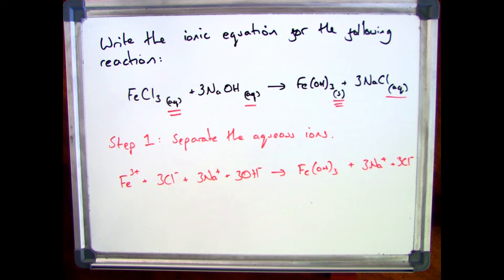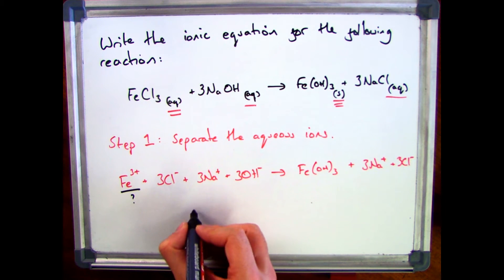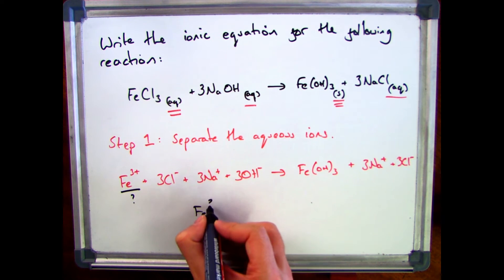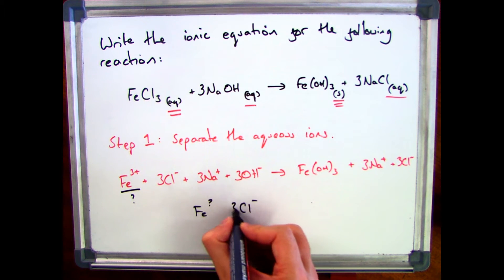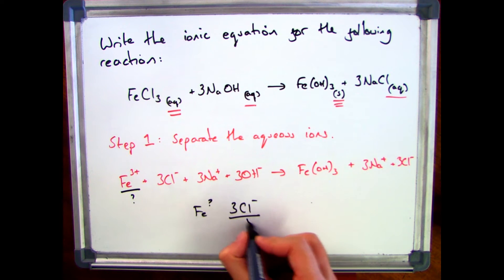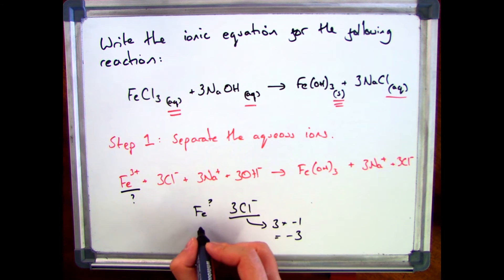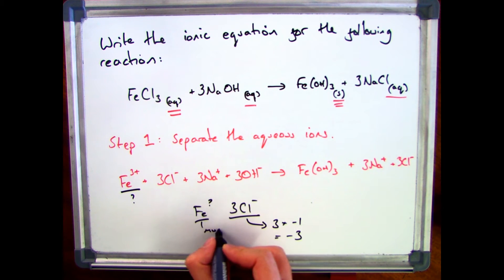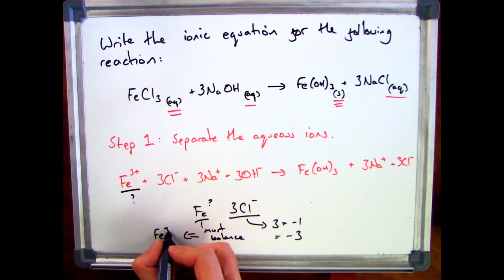If you're not sure where I got the Fe³⁺ from: if it's a transition metal and you can't work out the charge from the outer shell, you work it out from the compound. In FeCl₃, each Cl has a charge of minus 1, giving 3 negative charges total, so the iron ion must be plus 3 to balance. Therefore it becomes Fe³⁺.